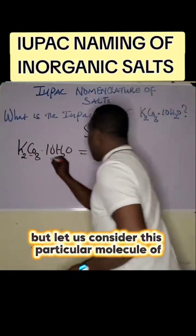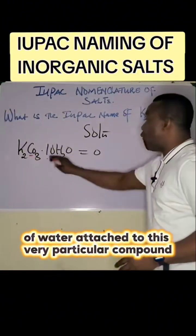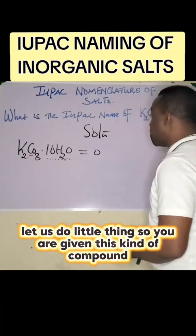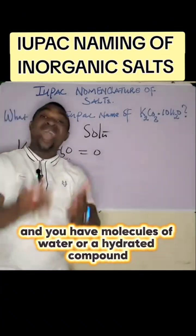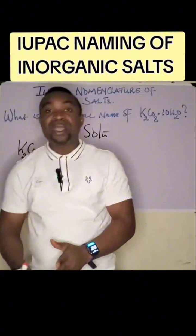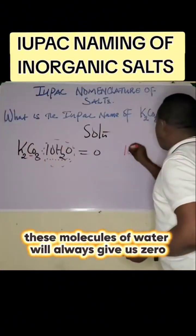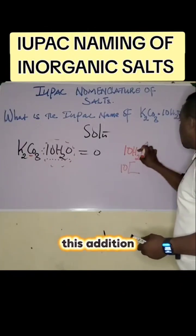Let us consider this particular molecule of water attached to this compound. When you are given this kind of compound with molecules of water, a hydrated compound, these molecules of water will always give us zero. For example, 10 is multiplying this. Oxidation number of hydrogen is plus one.